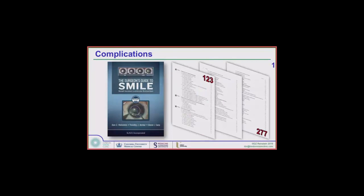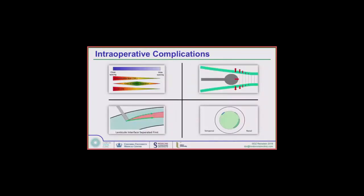We have five minutes for complications. Our textbook, based on our learning curve of 4,000 eyes, has 154 pages on complications alone. We're obviously going to have to pick a few of the greatest hits to talk about, and I picked these four because I think they're the main pitfalls for people starting SMILE.